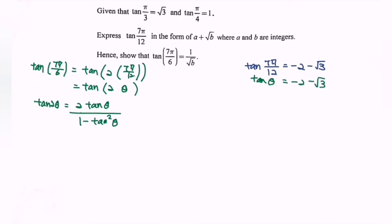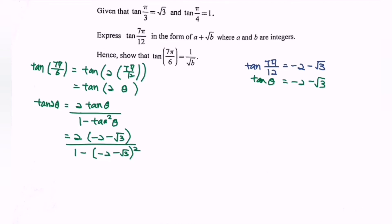Kindly substitute the situation. So we have 2·(−2 − √3) / [1 − (−2 − √3)²]. This gives us −2(2 + √3) / [1 − (4 + 4√3 + 3)].